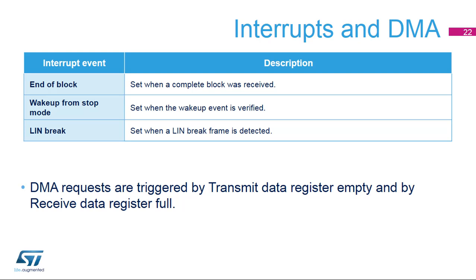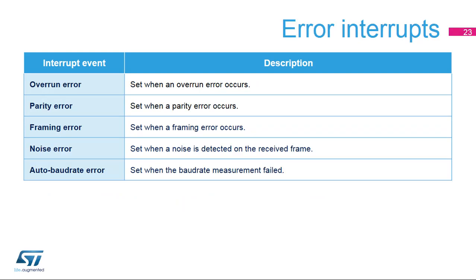DMA requests can be generated when receive buffer not empty or transmit buffer empty flags are set. Several error flags can be generated: the overrun error flag, the parity error flag, the framing error flag, the noise error flag when noise is detected on the received frame, and the auto-baud rate error flag when the baud rate measurement failed.